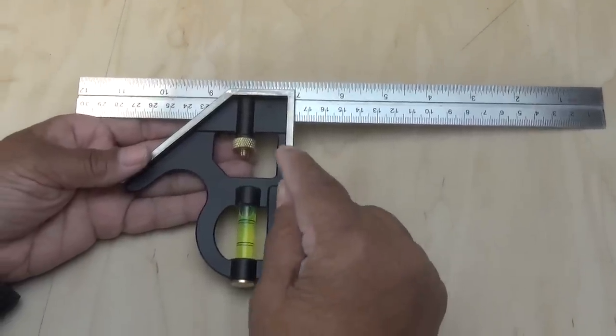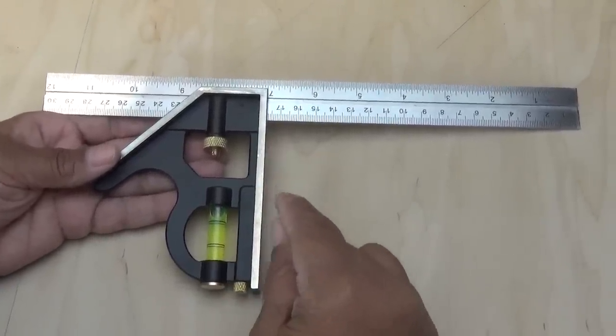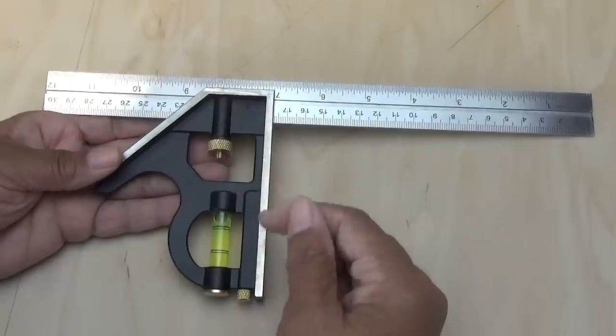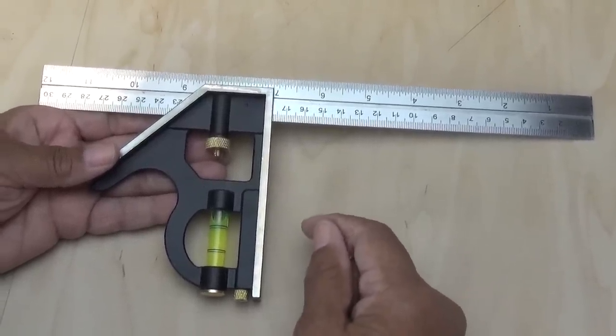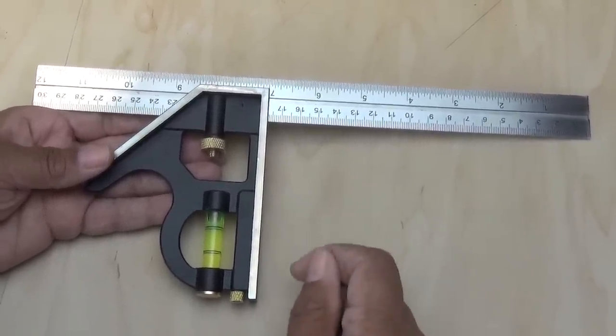Today's video has to do with the secret hidden tool in every combination square. I'm going to show you where it's hidden and how to use it coming up next.